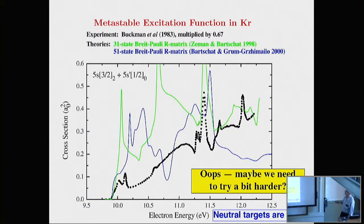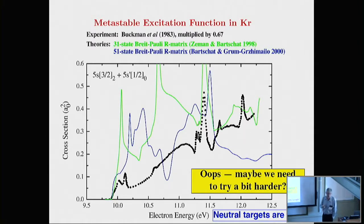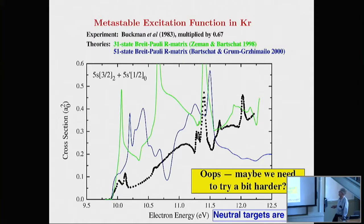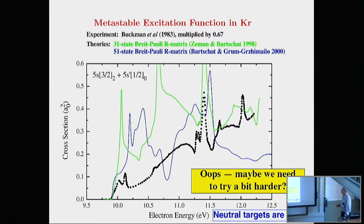But then you do something else — for example, the metastable excitation function in krypton. If I hadn't been a co-author of these two disastrous calculations, I wouldn't show them. We tried very hard and it didn't work. It turns out neutral targets are tough to start with, and things like krypton, which in the excited state has an open P-shell, is really different.